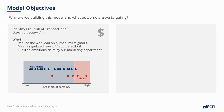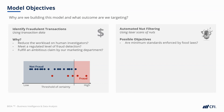Similarly, a nut processing company might have an automated nut filtering system that scans nuts with a laser. Again, there are multiple possible objectives. Are there minimum quality standards enforced by the law? Perhaps the quality we're willing to accept is dependent on our crop, or maybe we assess our standards versus our competitors. All of this will affect at what threshold the model should classify a nut as acceptable.